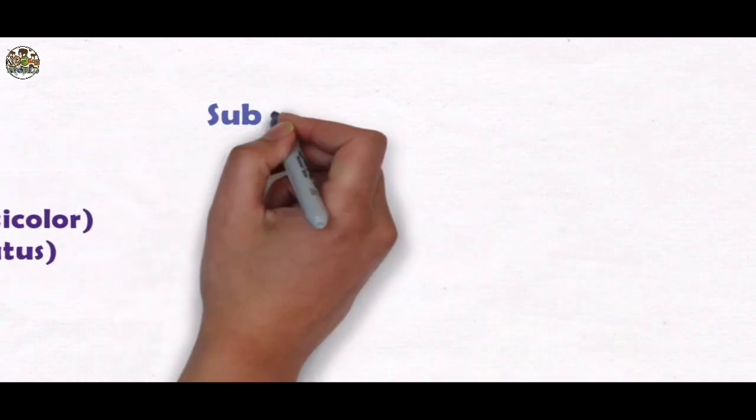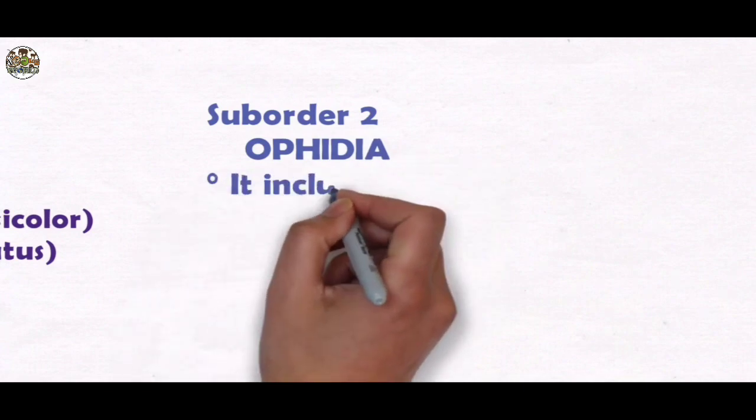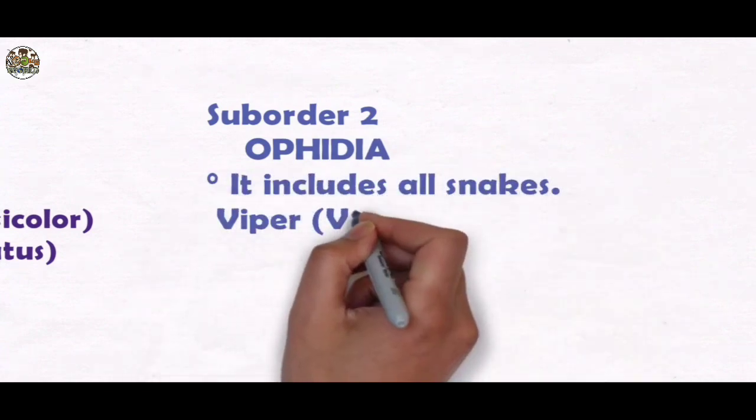Suborder 2: Ophidia - it includes all snakes, i.e., Viper, Krait, Cobra.